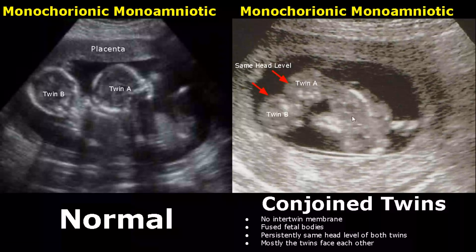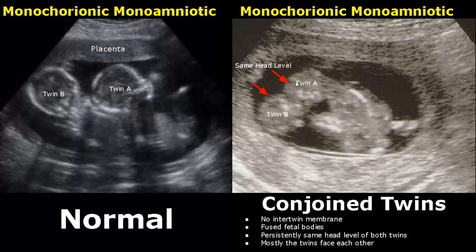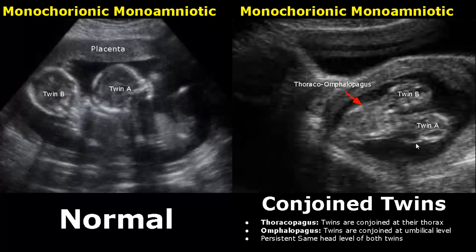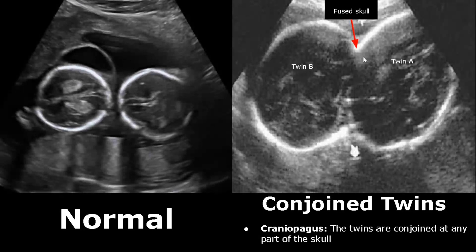Conjoined twins refer to fusion of fetal twins — the twins are attached to each other, and you can see the fusion of the chest and abdomen. The head level of both twins will persistently remain at the same level, and in most cases the twins will be facing each other. Thoracopagus refers to twins conjoined at the chest, and omphalopagus refers to twins conjoined at the abdomen. This image shows fusion of both chest and abdomen, so these are named thoracomphalopagus twins. Craniopagus refers to fusion of any part of the skull of the twins.